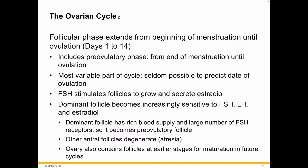The follicular phase extends from the beginning of menstruation until days 1 to 14. It includes what we call the pre-ovulatory phase — from the end of menstruation until ovulation, the bursting forth of an egg cell out of the follicle. This phase has the most variation in the cycle, so you're not always able to predict the exact date of ovulation.